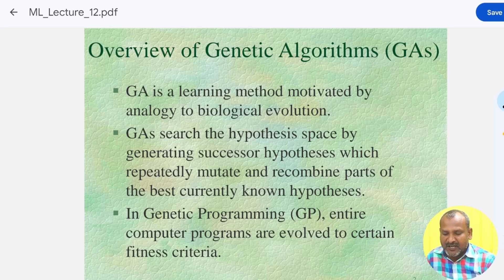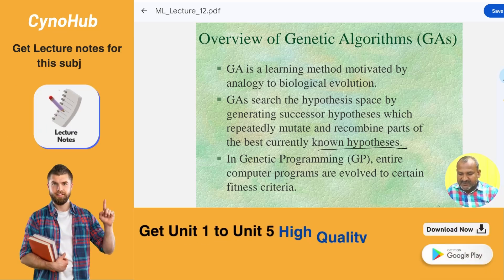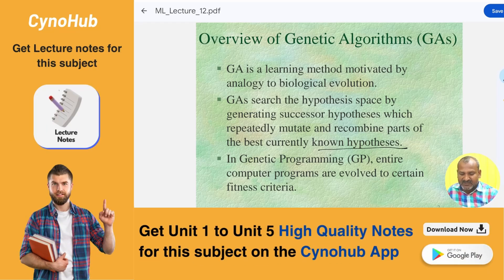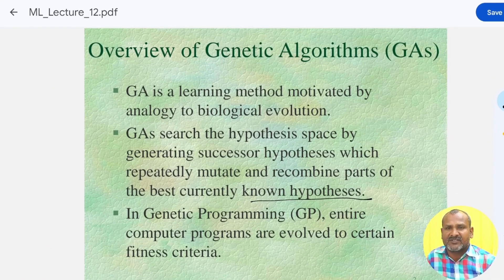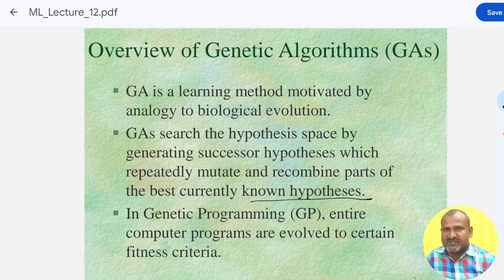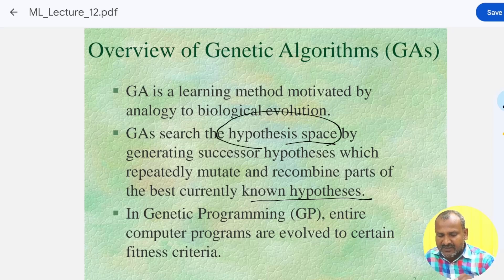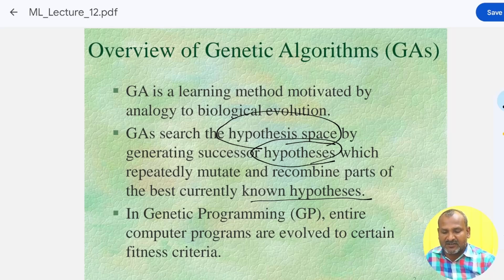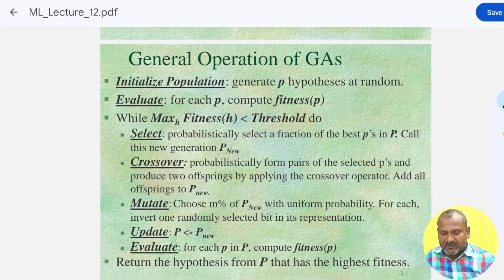Genetic algorithms are part of genetic programming where entire programs are evaluated against certain fitness criteria. We are mapping the human brain to the machine, and in this context hypothesis space and hypothesis play a very important role in genetic algorithms.